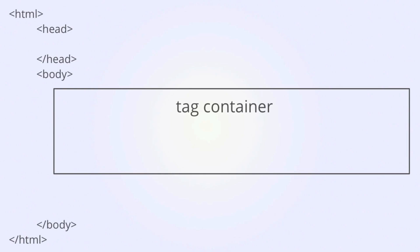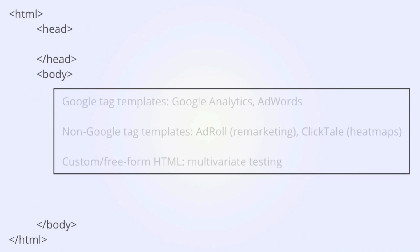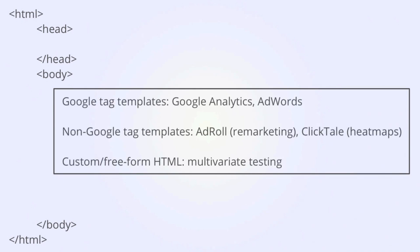Once you have the container included on all pages of your website, you can start to deploy tags through the Google Tag Manager interface. Google Tag Manager provides a variety of templates for adding tags to the container. There are templates for Google services such as Analytics and AdWords, templates for non-Google services such as AdRoll remarketing or ClickTail heat mapping, and a freeform HTML field for any tags without an existing template.